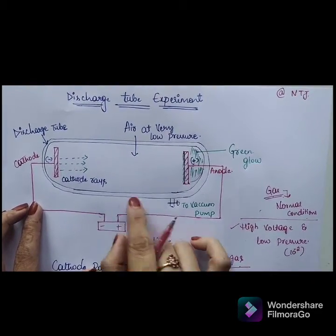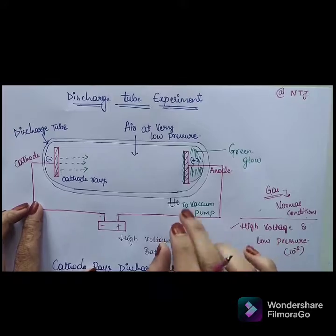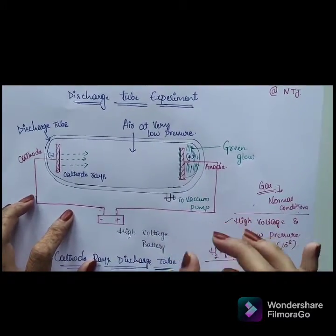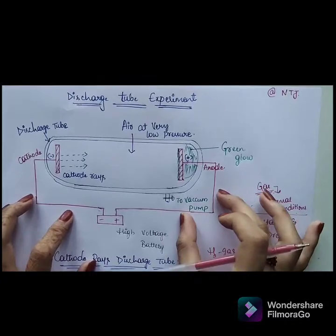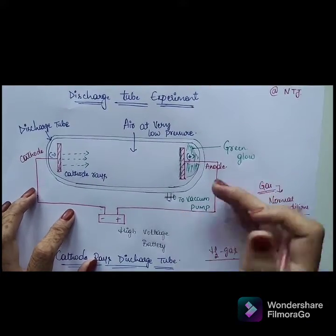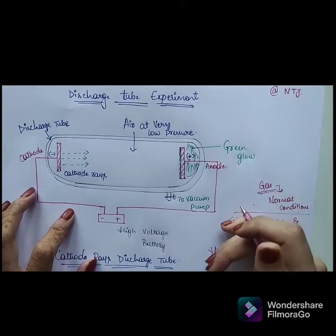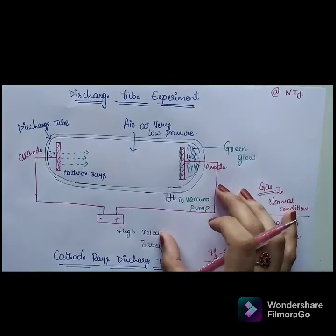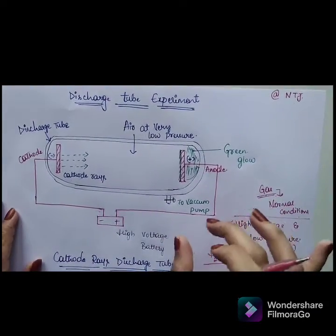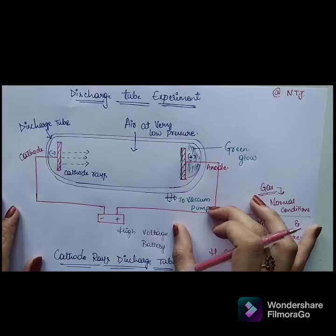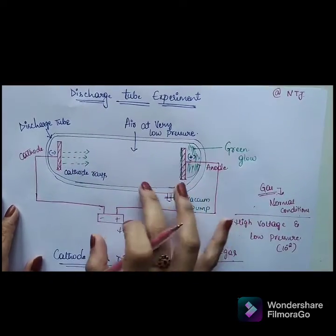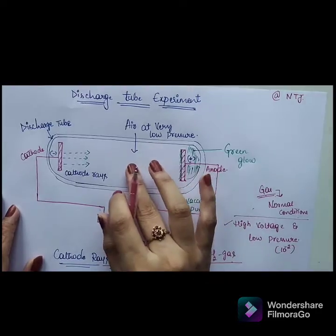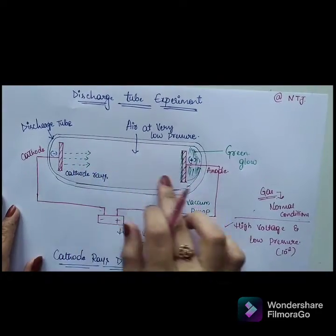The electrodes are also connected to an induction coil. The use of the induction coil is that it induces the high voltage — that's why we connect it. Additionally, these two tubes are connected to a vacuum pump in order to create a very low pressure inside the discharge tube.